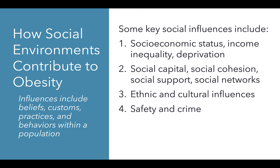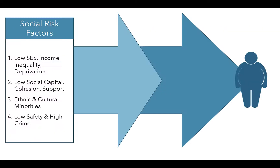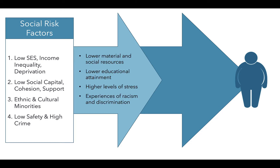The levels of safety and crime we experience in our different environments contribute to social influences as well. When an individual experiences these social risk factors — including low socioeconomic status, income inequality, deprivation, low social capital, cohesion and support — they are ethnic and cultural minorities, and they live in low safety and high crime neighborhoods. These factors lead to the mediating factors of lower material and social resources, lower educational attainment, higher levels of stress, and experiences of racism and discrimination.